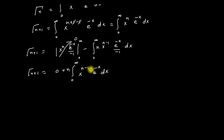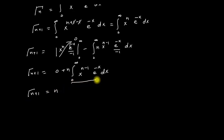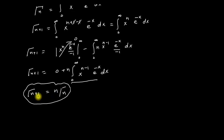If we look at this integration, it is exactly the definition of the Gamma function, which equals Gamma(n). So we can write that Gamma(n+1) equals n times Gamma(n). This is the required derivation of the first property of the Gamma function.